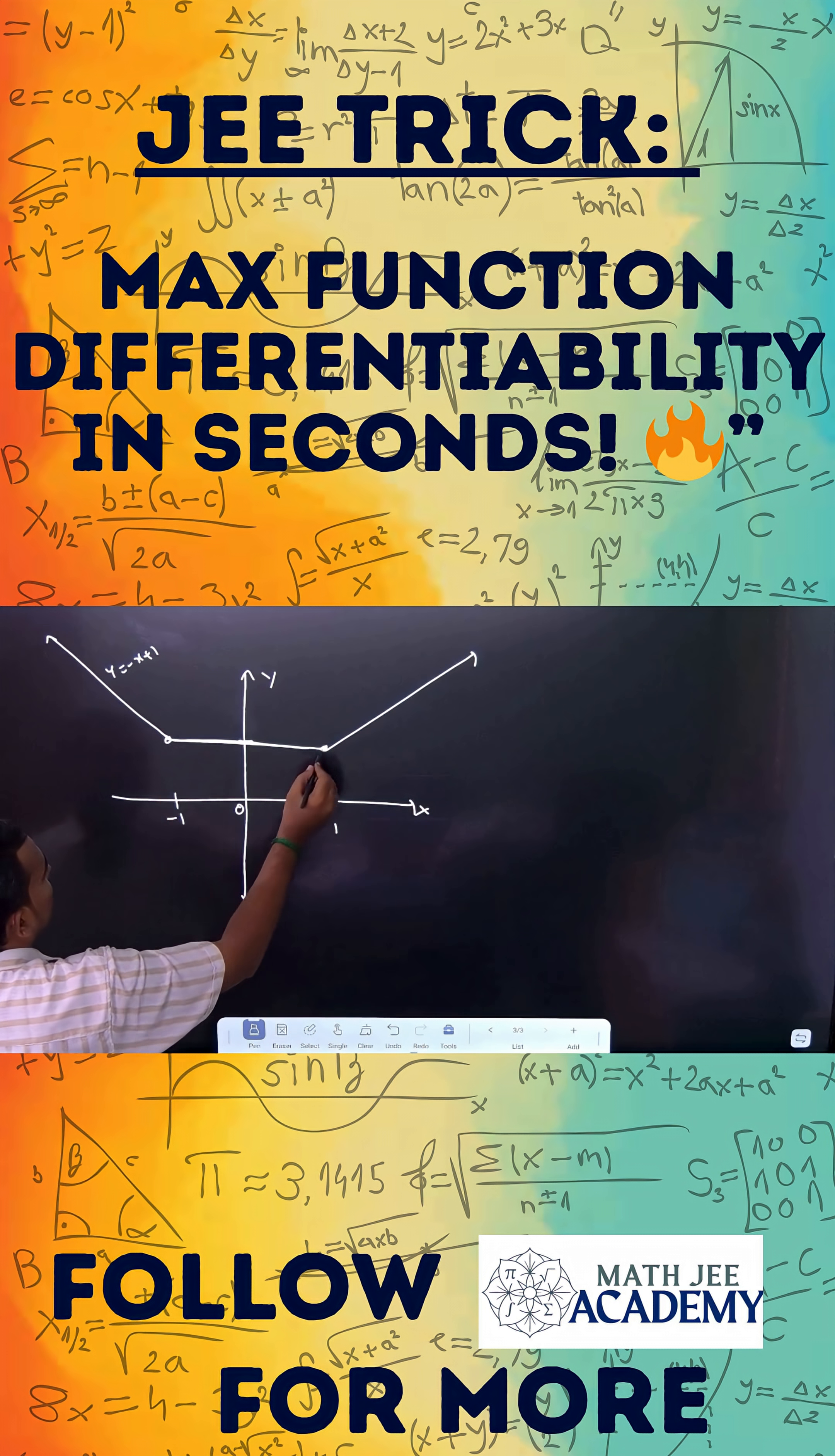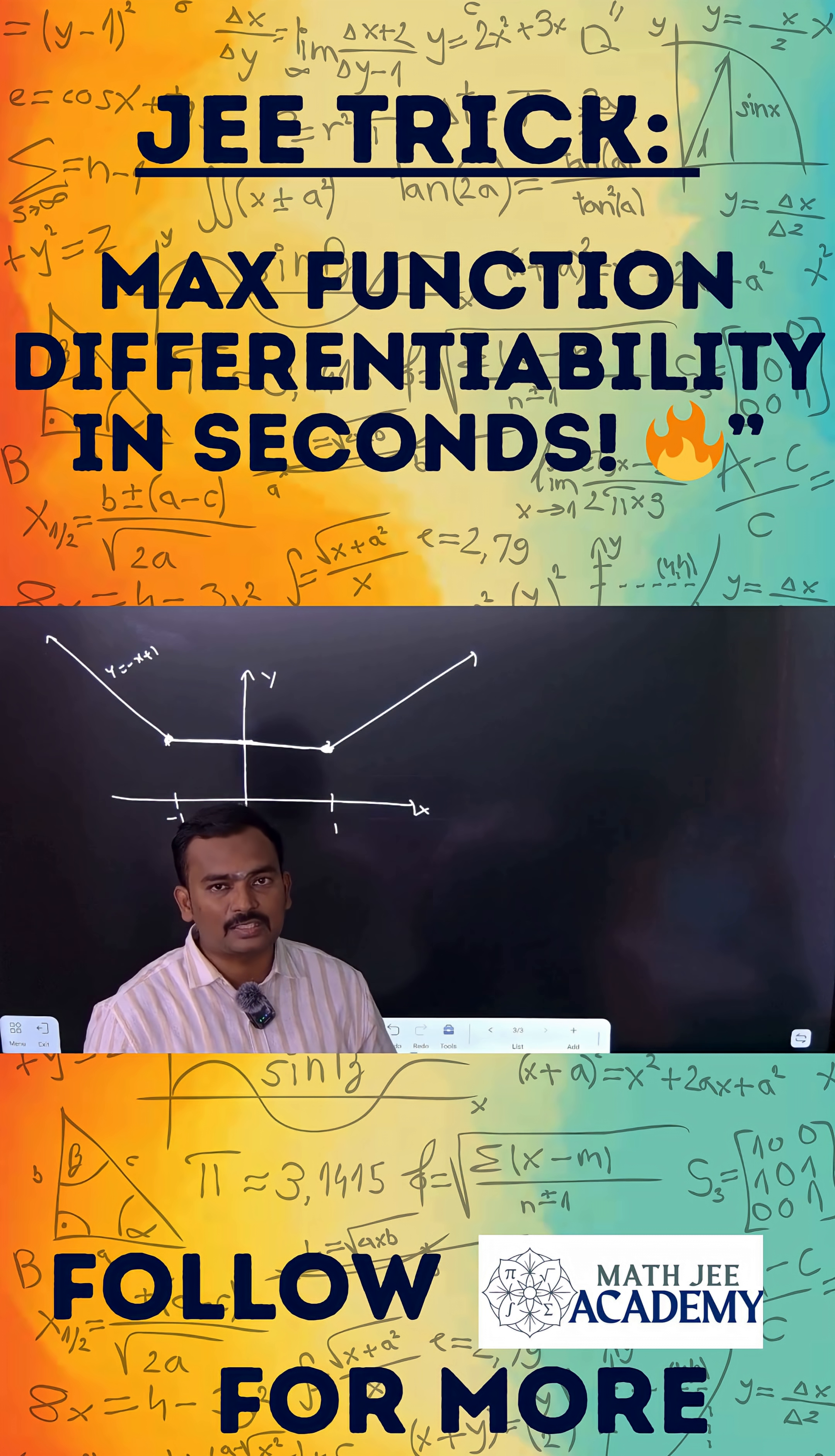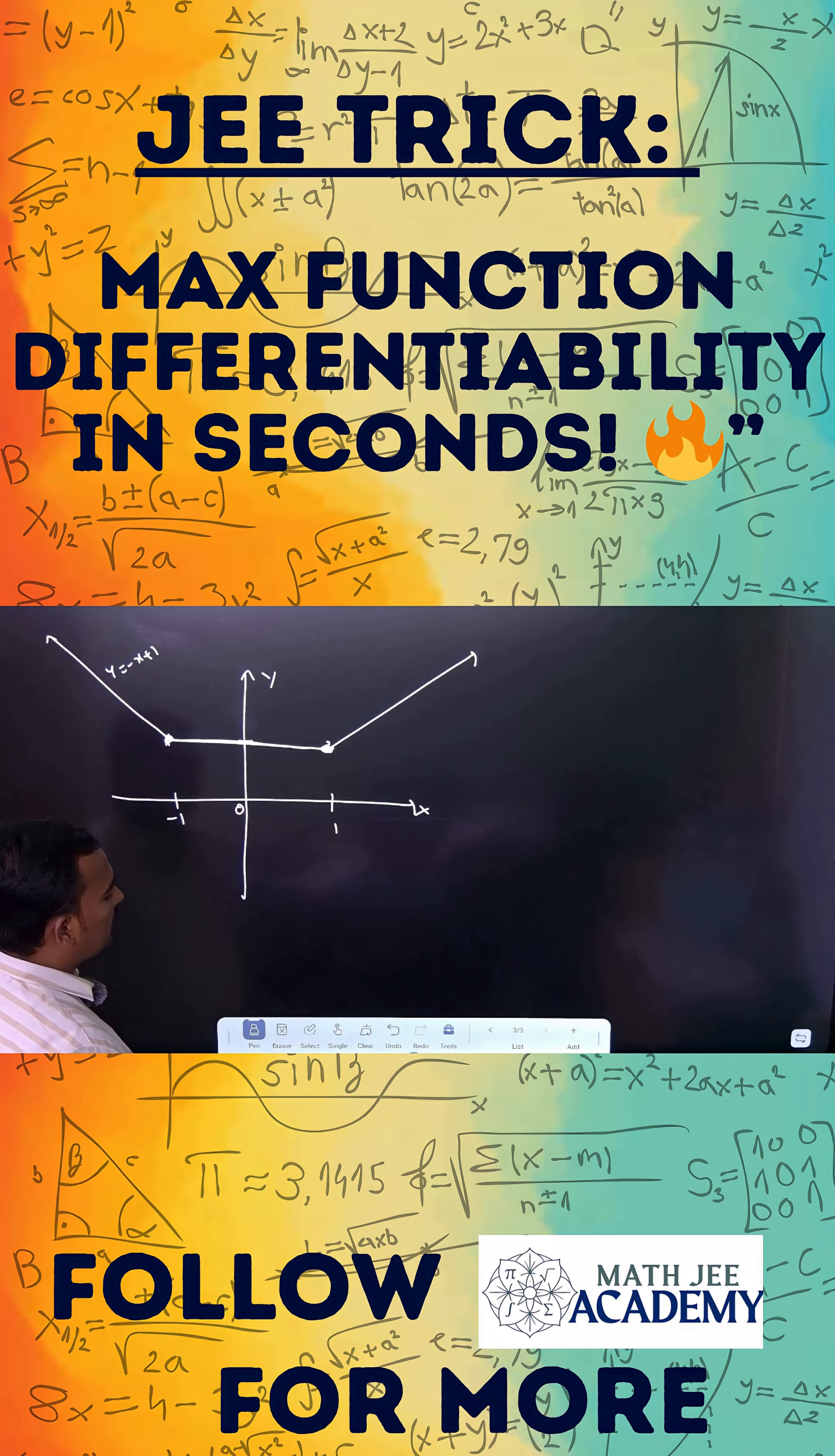Therefore, the function is continuous everywhere, but it is not differentiable at x equal to minus 1 and plus 1 because there is a sharp edge at minus 1 and plus 1. So there is no unique tangent. Therefore, it is not differentiable at x equal to minus 1 and 1.